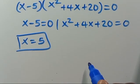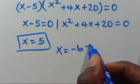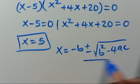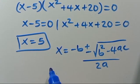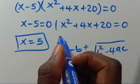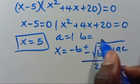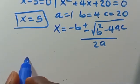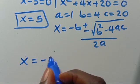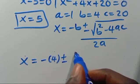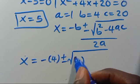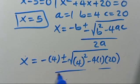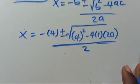Then let's check the second expression. We have X equals minus B, positive or negative, root of B squared minus 4AC, over 2A. Parameter A is the coefficient of X squared, which is 1. Parameter B is the coefficient of X, which is 4. And C equals 20. So X equals minus 4, positive or negative, square root of 4 squared minus 4 times 1 times 20, over 2.